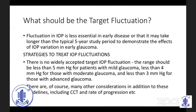What should be the ideal target fluctuation IOP? IOP fluctuation is less critical in early disease, or may take longer than a typical 5-year study period to show its effects. There is no widely accepted target IOP fluctuation, but I suggest the range could be less than 5 mmHg for mild glaucoma, less than 4 mmHg for moderate glaucoma, and less than 3 mmHg for advanced glaucoma. Other considerations include corneal thickness, rate of progression, and other factors discussed earlier.